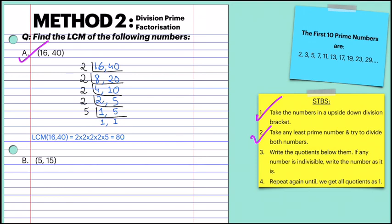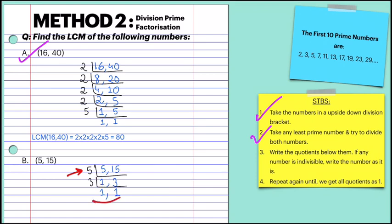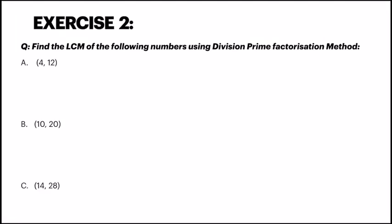To find the LCM, multiply all the divisors used on the left side. So LCM of 16 and 40 is 80. For the second example, 5 and 15: take 5 — 5 divided by 5 is 1, and 15 divided by 5 is 3. Then take 3 — 3 divided by 3 is 1. The last two numbers are 1 and 1. So LCM of 5 and 15 is 5 into 3, which equals 15. The answers for exercise 2 are in the answer key in the description.